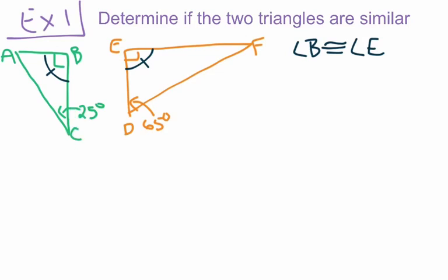When we look, we see that angle C is 25 degrees and angle D is 65 degrees. We don't know the measure of angle A or angle F. So what we can do is try to show that angle A equals 65 degrees, or that angle F equals 25 degrees. If we can do either of those things, that will give us our second pair of congruent angles, and we can say the triangles are similar.